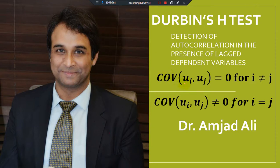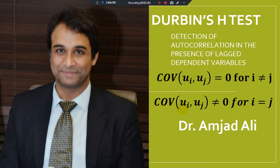One of the assumptions of OLS is that the covariance between the two errors is equal to zero. This means that the two errors are not correlated — they are independent of each other. If the two errors are not independent, the covariance between them is no longer zero, and there may be chances that two errors are correlated. If this situation occurs, we can say that there is autocorrelation present in our data or in our error term.